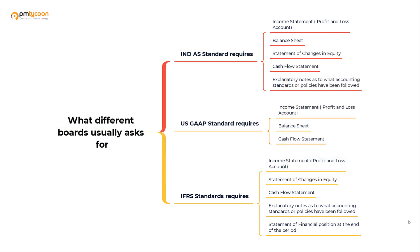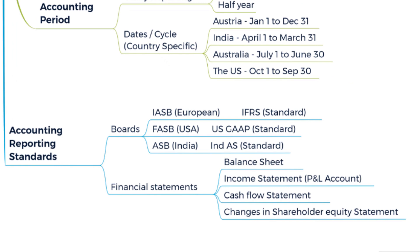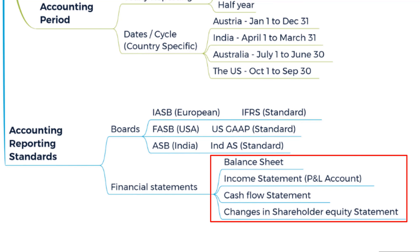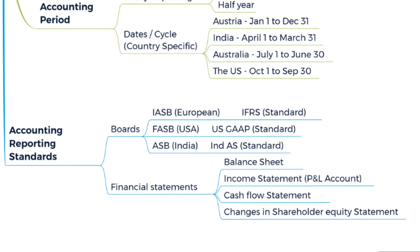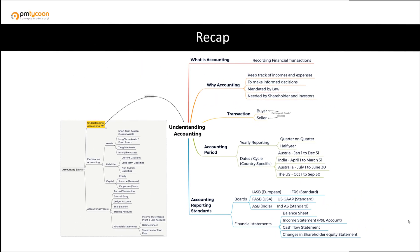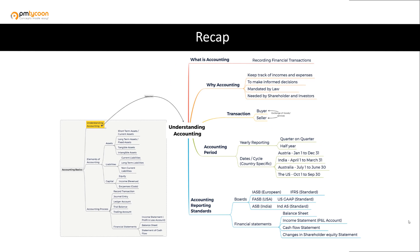You do not need to remember the details about these boards, standards, and the reports they require. This is just good-to-know information to give you a holistic understanding that there are boards and standards each company must follow within their own country. If you are new to accounting, don't get bogged down by terms like balance sheet, income statement, or profit and loss account — we haven't discussed them yet, but everything will make perfect sense by the end of this video.